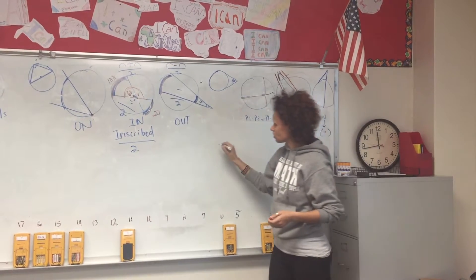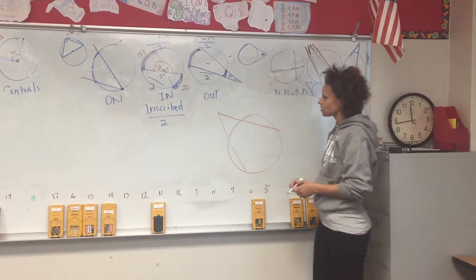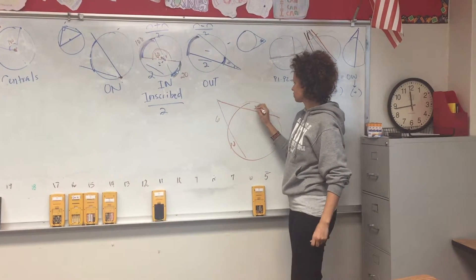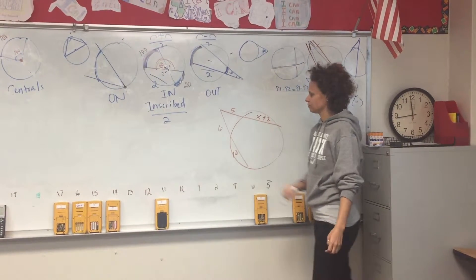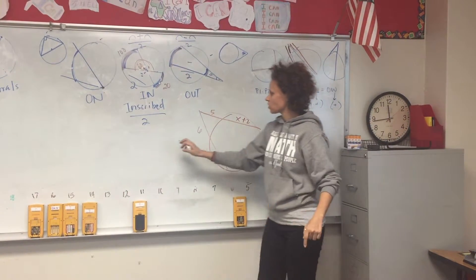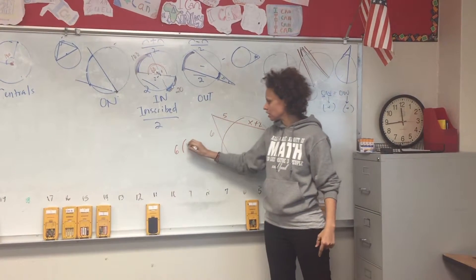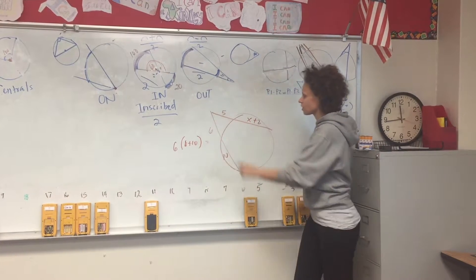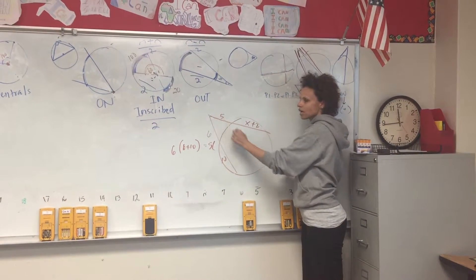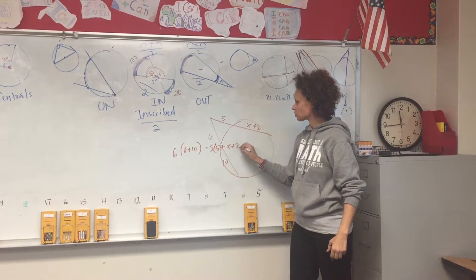If the intersection is outside the circle, you do this segment times the whole thing equals the other segment times the whole thing. For example, if the outside segment is 6, the inner part is 10, and the other outside piece is 5 with an unknown x plus 2: it's always the outside times the whole thing, so you add the two parts. Six plus ten equals five times five plus x plus two.